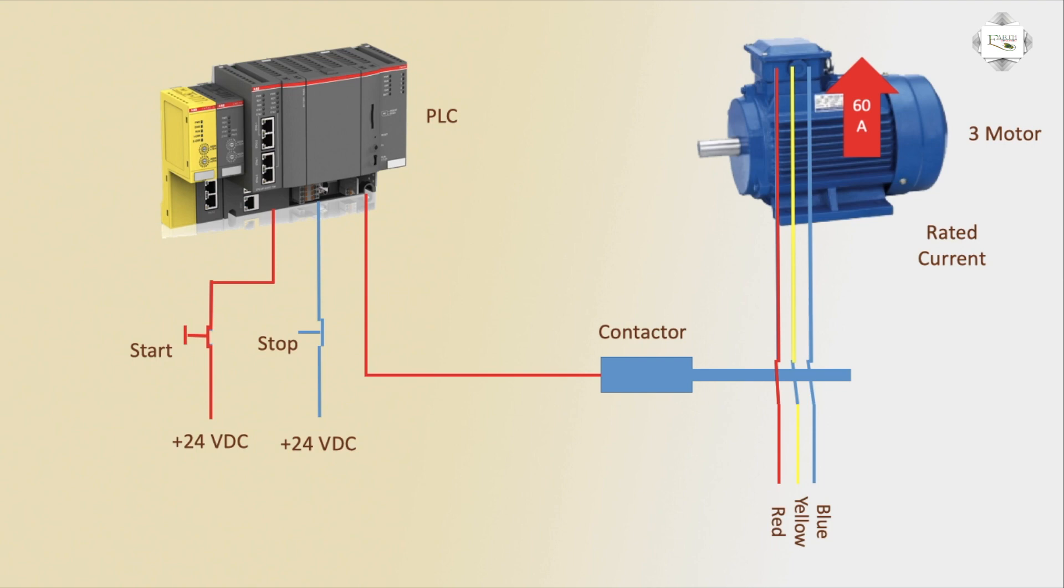This is the PLC programming. When I press the stop button, the 24 volt is disconnected and PLC output does not supply voltage, and the contactor disconnects the supply. That time motor is off. This is the PLC programming.